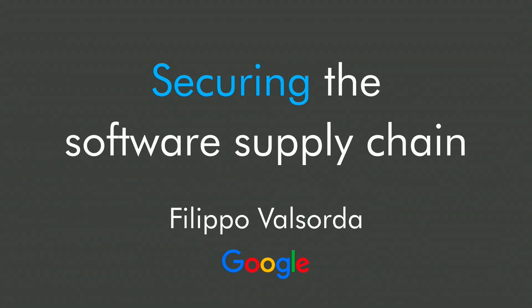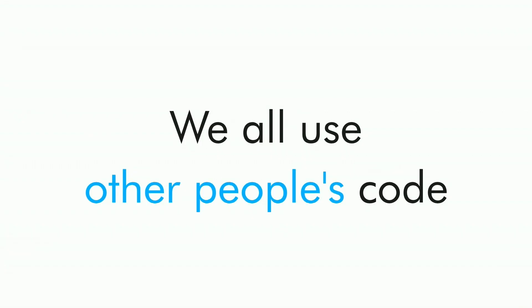What's the software supply chain? It's a fairly simple concept. We all use other people's code. Modern software development practices involve using third-party software made available through the open source ecosystem. And instead of reinventing the wheel for every project, for every company, we depend on and import these third-party software as dependencies.